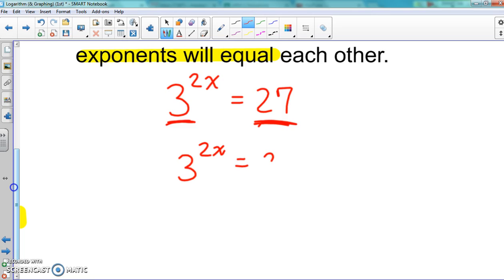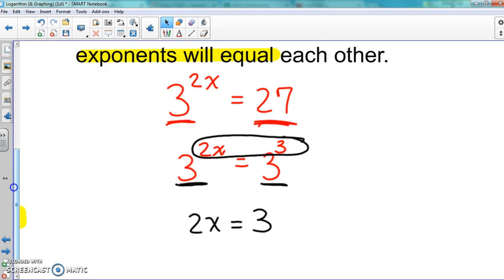All right, so we've actually gotten three cubed. So we know that 3 cubed equals 27. And we said if they have the same base number, the exponents will equal each other. So in this case, that means 2x is going to equal 3. So 2x here equals 3 which is right here, not the base 3, but the actual exponent 3.